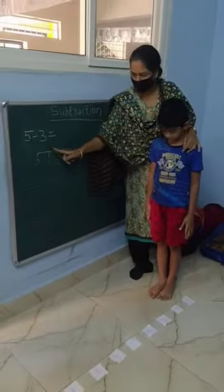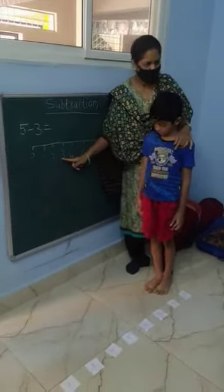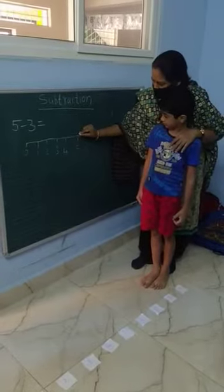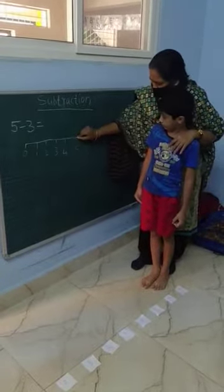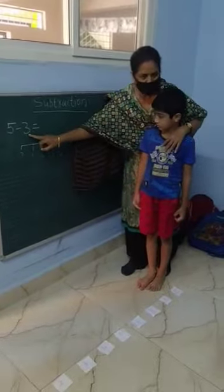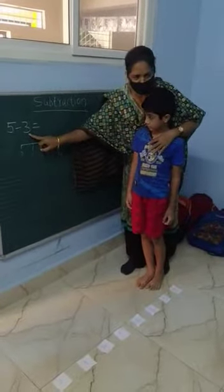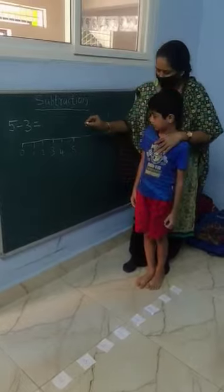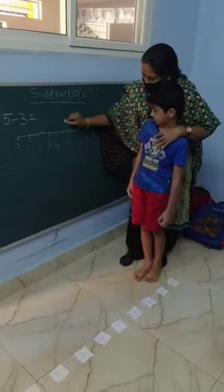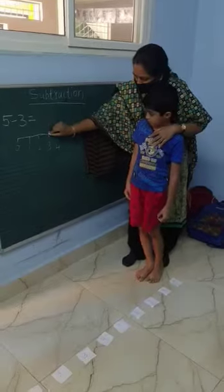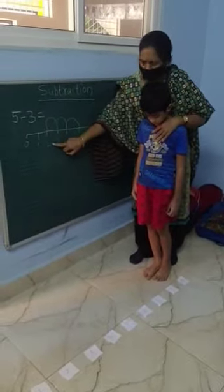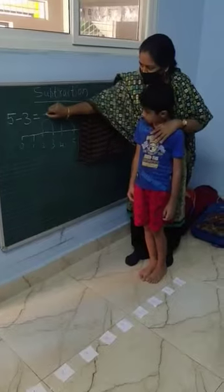First we will do it on the number line. Where is the first number? First number is 5 — stand on 5. How many times do we have to count? 3. So you have to jump 3 times backwards: 1, 2, 3. What number did you get? 2. So the answer is 2.